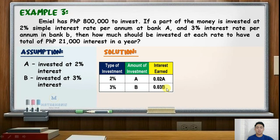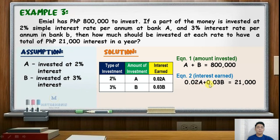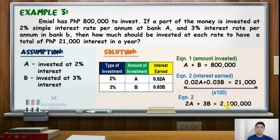We will now construct our working equations. Equation 1 covers the total amount invested: A plus B equals 800,000. For equation 2, we add the interest earned values and equate to the target of 21,000 pesos: 0.02A plus 0.03B equals 21,000. Multiplying equation 2 by 100 to obtain whole number coefficients, equation 2 becomes 2A plus 3B equals 2,100,000.